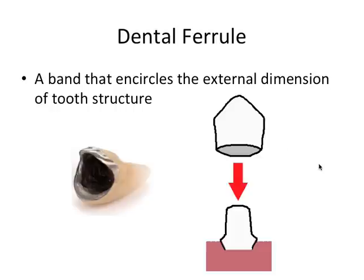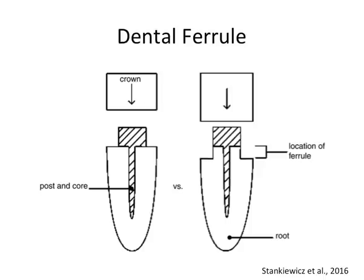But let's get to a case where ferrule is a more important consideration. From this paper, here's a drawing with two examples of teeth prepared to receive crowns. However, these teeth have already undergone root canal treatment and required a core filling material to restore the missing and decayed coronal tooth structure.